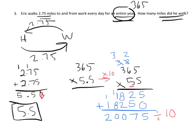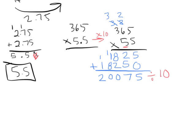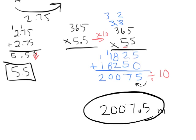So that we can get our proper answer. So in dividing by 10 we know that means we're going to move the decimal, and so we get 2,007.5 miles for the entire year.